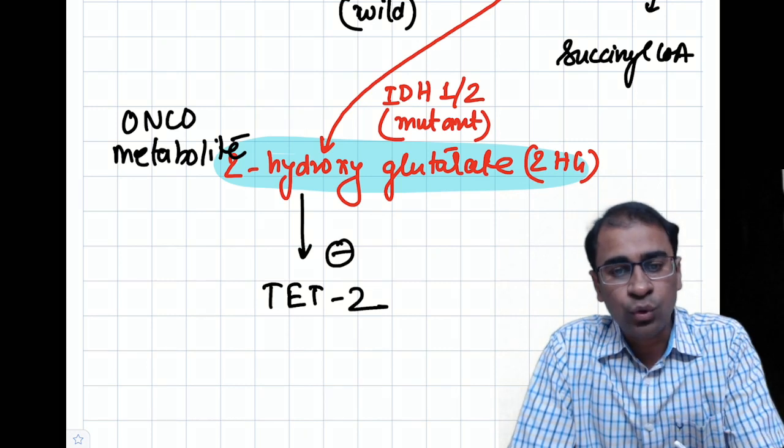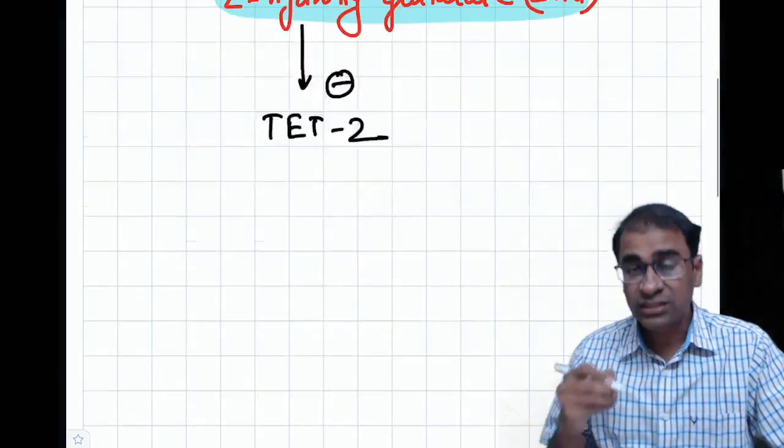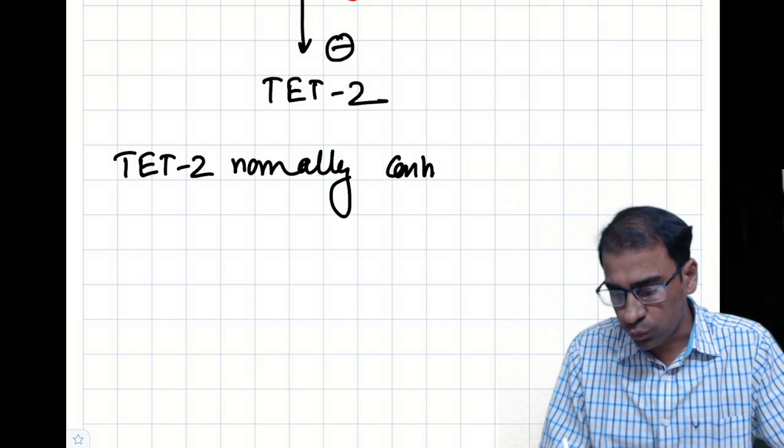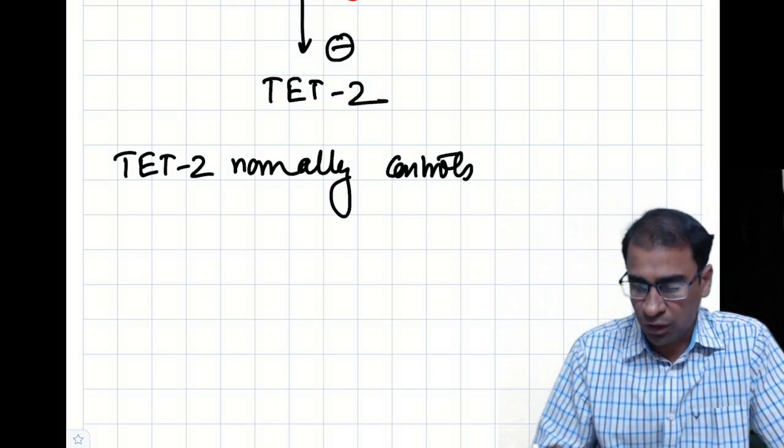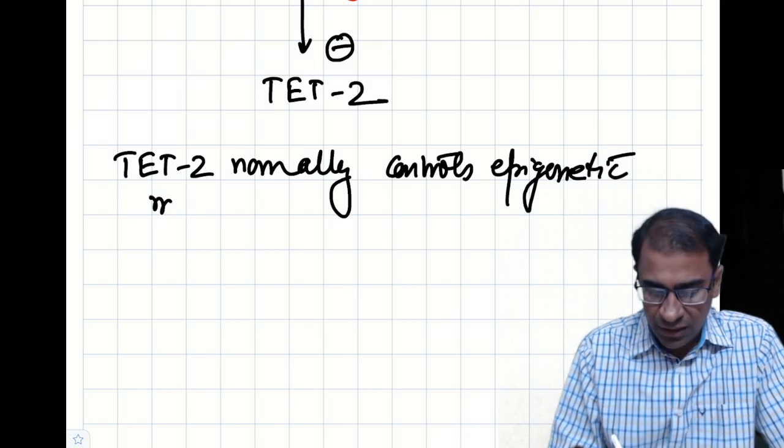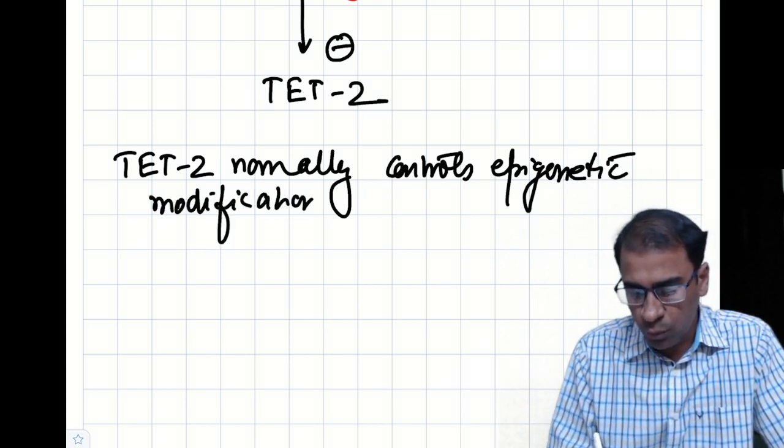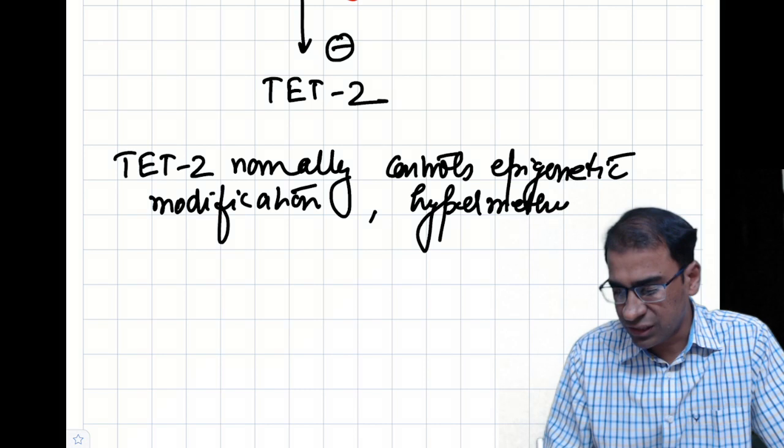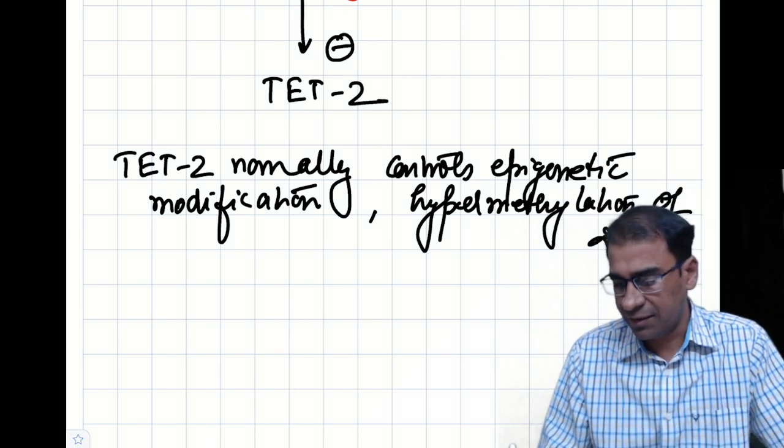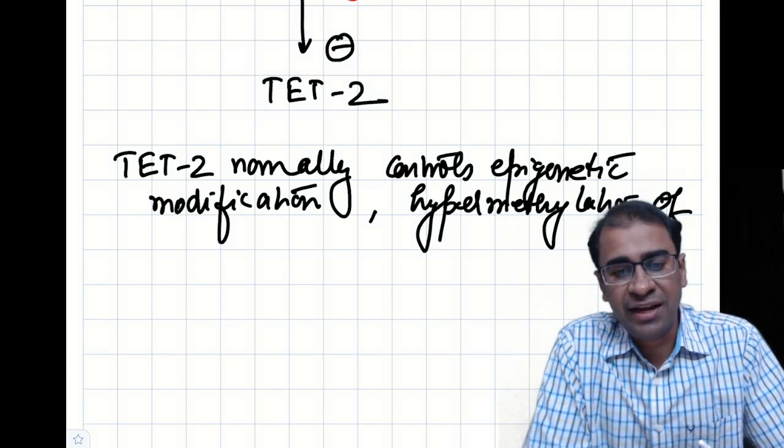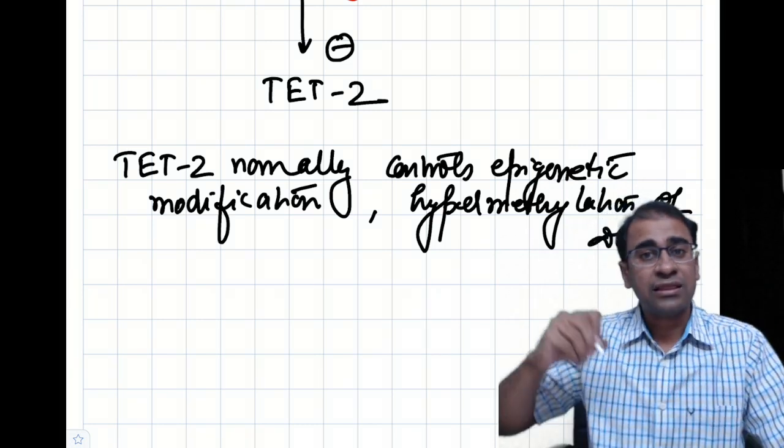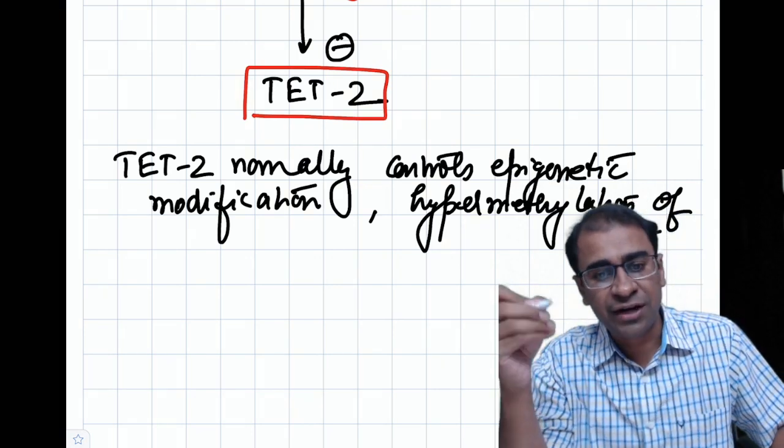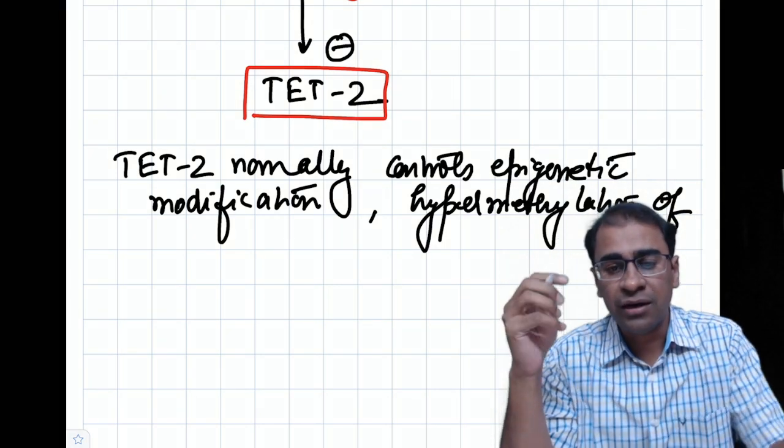TET2 normally controls epigenetic modifications. In simple words, it causes DNA hypermethylation. If the 2-hydroxyglutarate is inhibiting TET2, this inhibition of TET2 causes abnormal DNA methylation. This leads to abnormal DNA methylation.